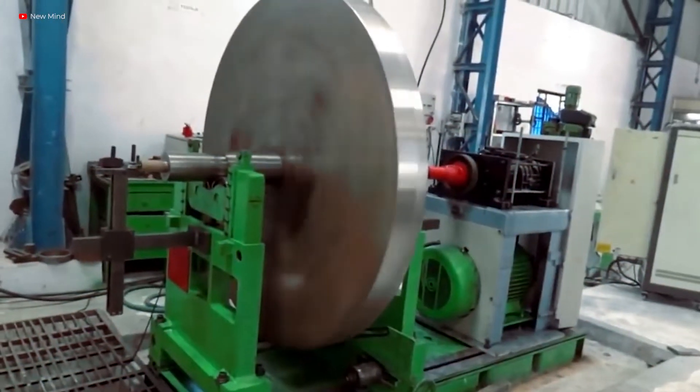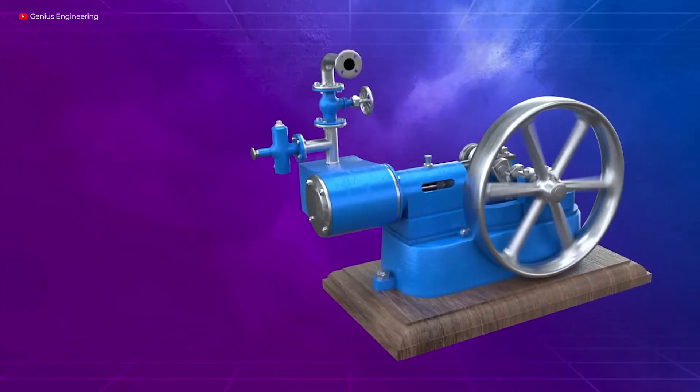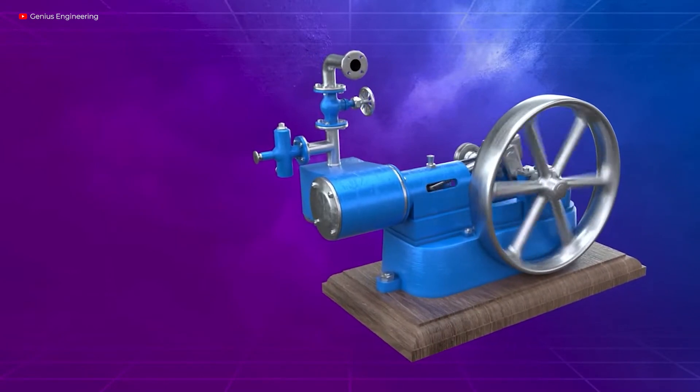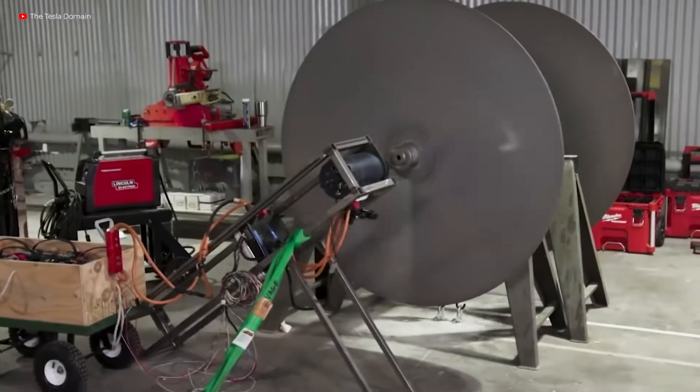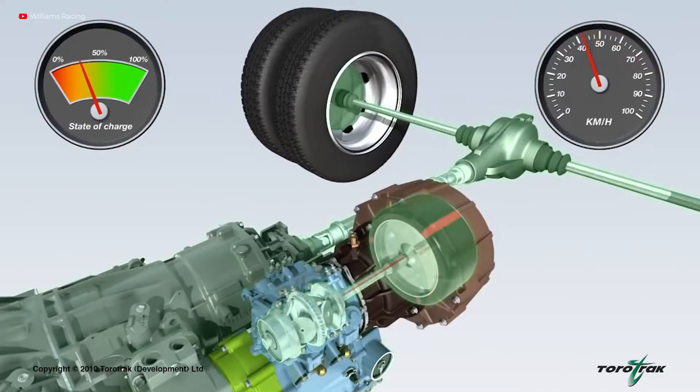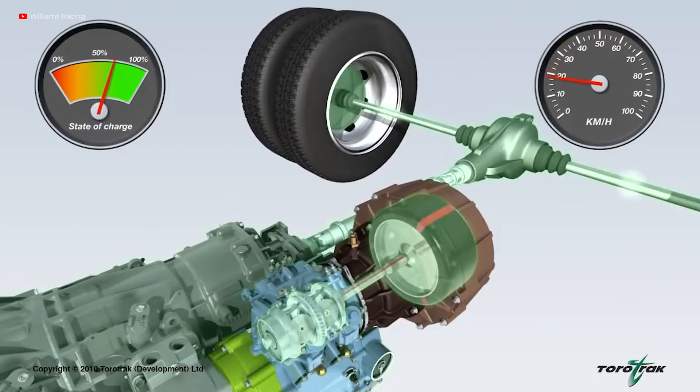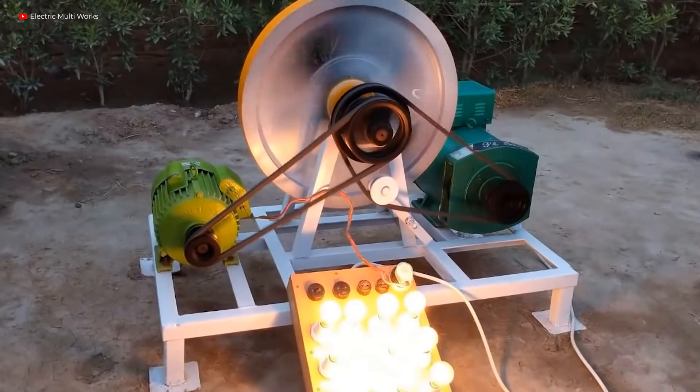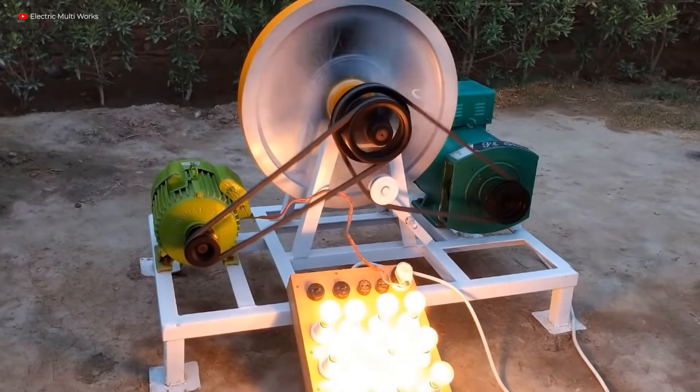Flywheel energy storage devices are a clever way to store kinetic energy as well as electricity. In its most basic form, the flywheel is a mechanical battery. It works by accelerating a rotor at a high speed using electricity, then converting the electrical energy into rotational energy and storing it. The energy is then collected by slowing the flywheel, which transforms the kinetic energy back into electrical energy, which can be delivered to wherever it's needed.